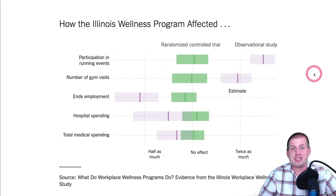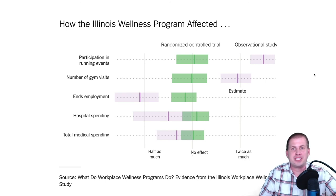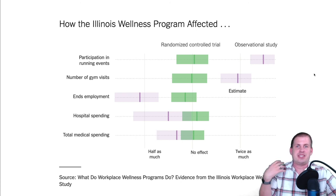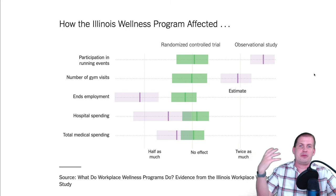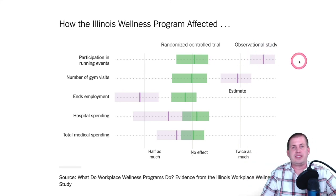There's a lot of self-selection in observational studies. If you're measuring participation in running events, people at running events probably care about their health and willingly enrolled in the wellness program. They did other things to improve their health because they care. Of course you'll see a huge effect in an observational study of people at marathons.